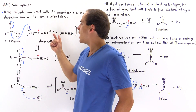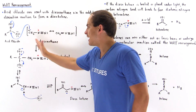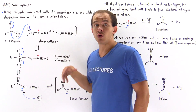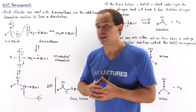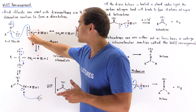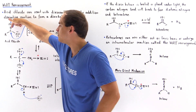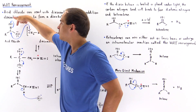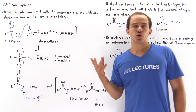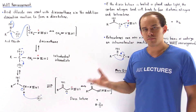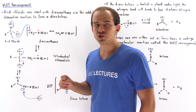We also have the resonance-stabilized diazomethane, which contains a lone pair of electrons on the carbon in one of its structures. Our diazomethane will act as a good nucleophile, creating a bond between this carbon and the carbonyl carbon, attacking it, displacing the pi bond, and placing it onto the oxygen. We form a tetrahedral intermediate that contains a negative charge on this oxygen.